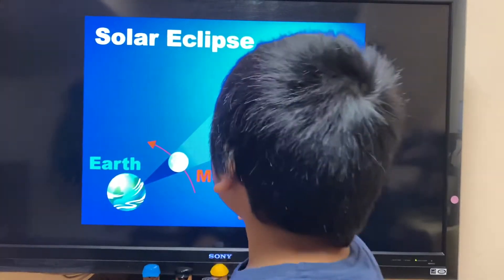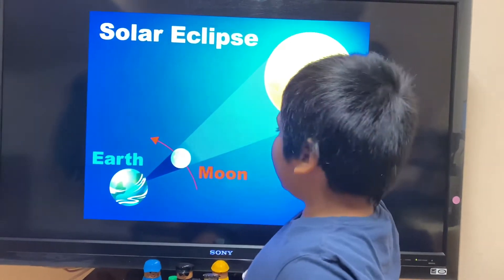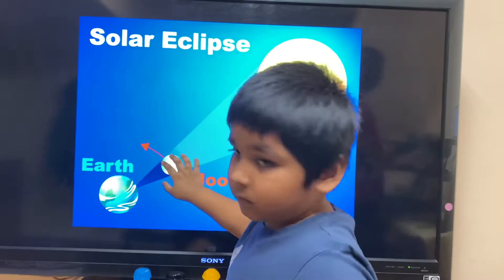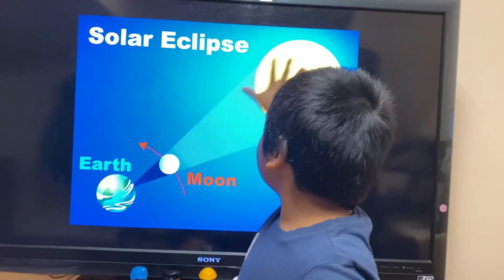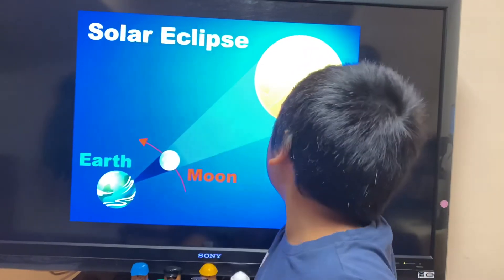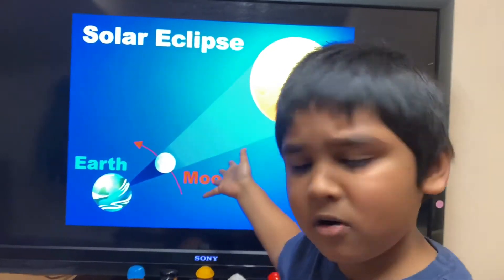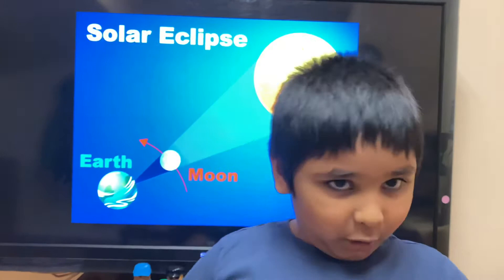The next one is solar eclipse. A solar eclipse is when the moon is between the sun and the Earth. It's kind of scary. When the moon covers the whole sun, it's daytime, but it looks like nighttime.